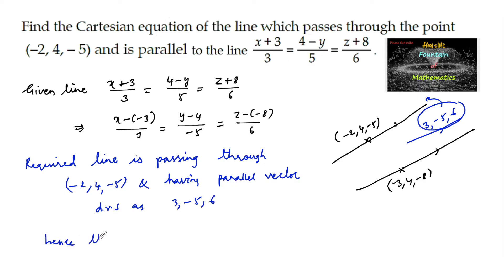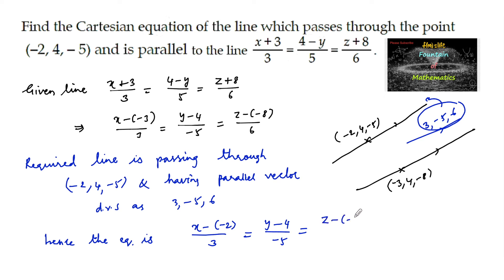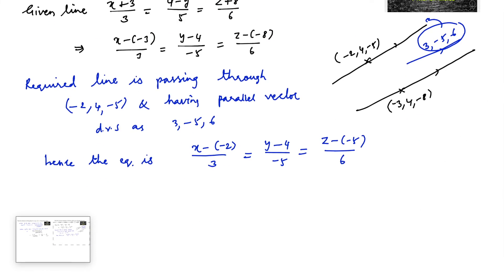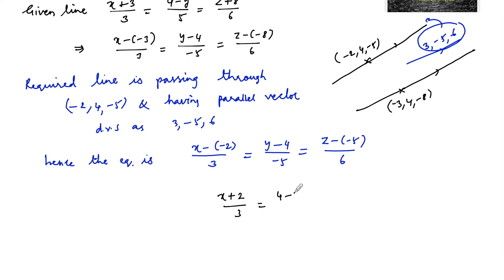Hence the equation is (x - (-2))/3 = (y - 4)/(-5) = (z + 5)/6, which can also be written as (x+2)/3 = (4-y)/5 = (z+5)/6. This is the required line equation.